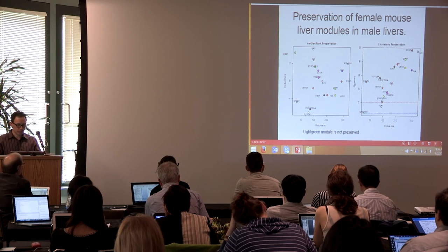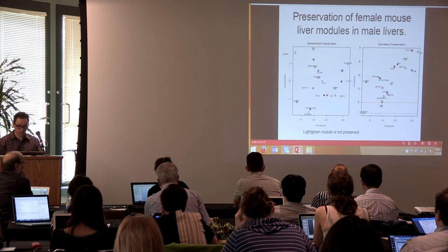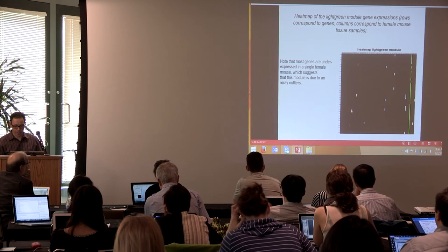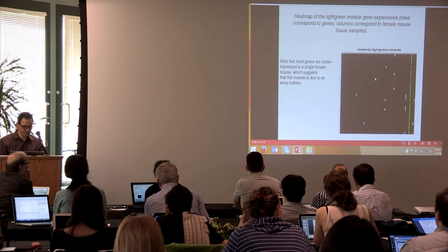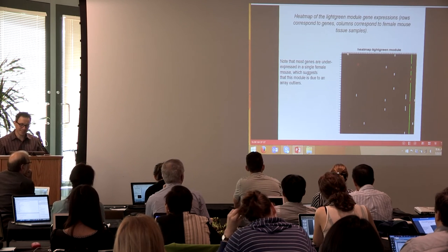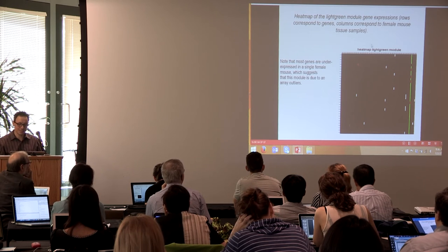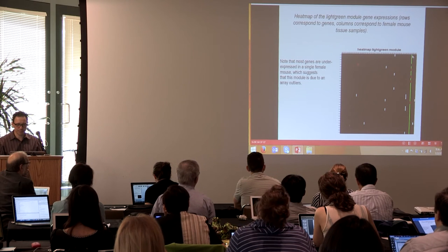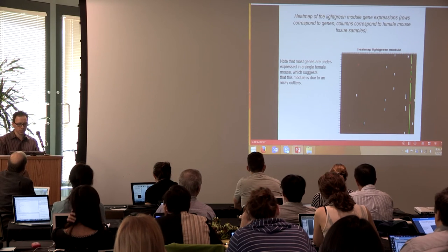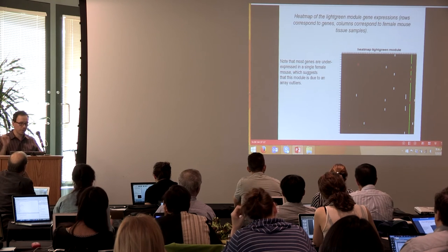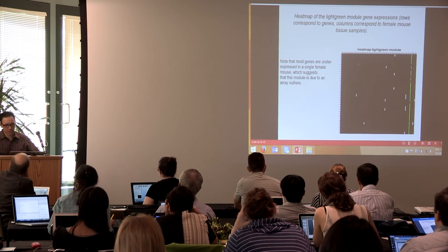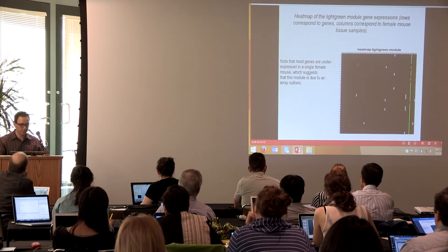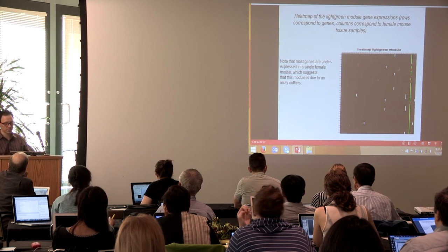Coming to the biological story: the light green module is not preserved between genders. Before writing a paper, look at the heatmap. The genes are the rows, the mice are the columns, and we see that these module genes are highly underexpressed in one single mouse liver sample. This is likely a technical artifact or tissue contamination — the module is not trustworthy.